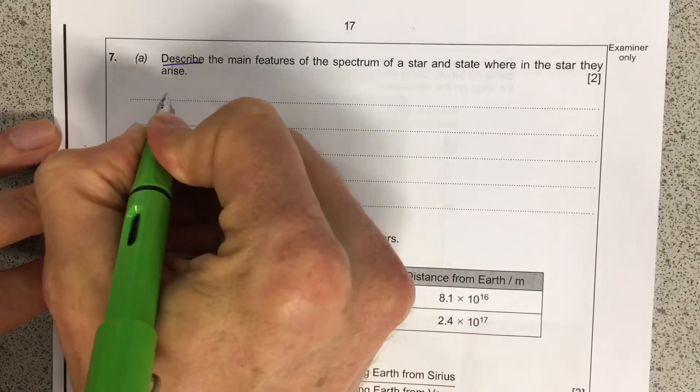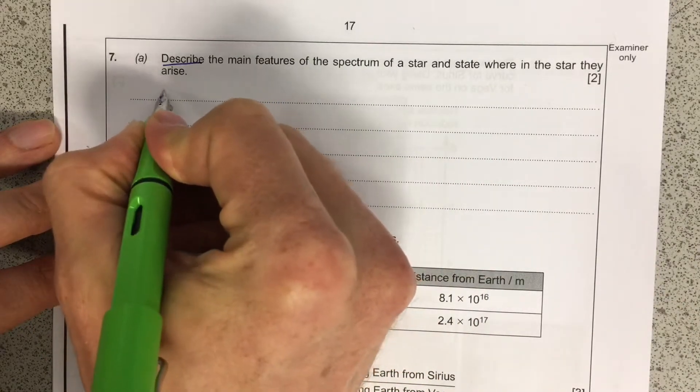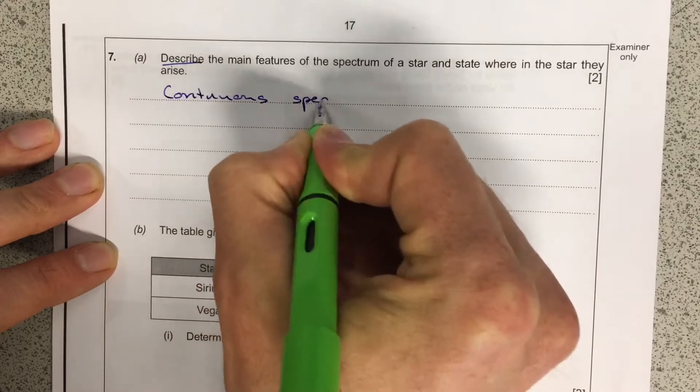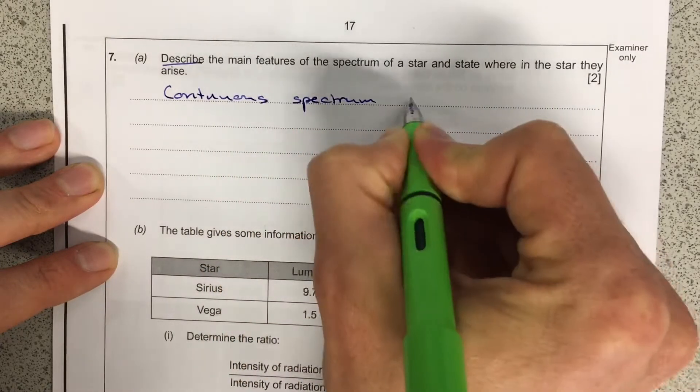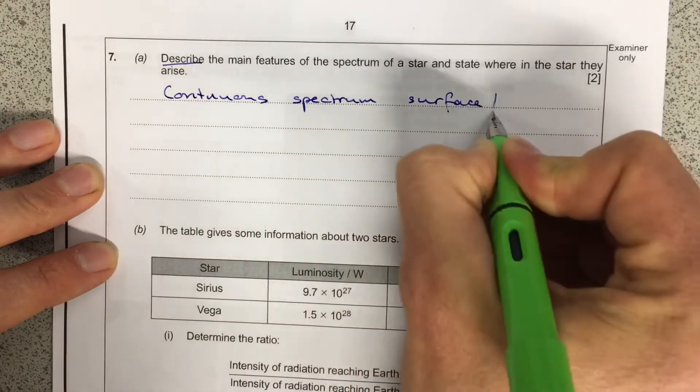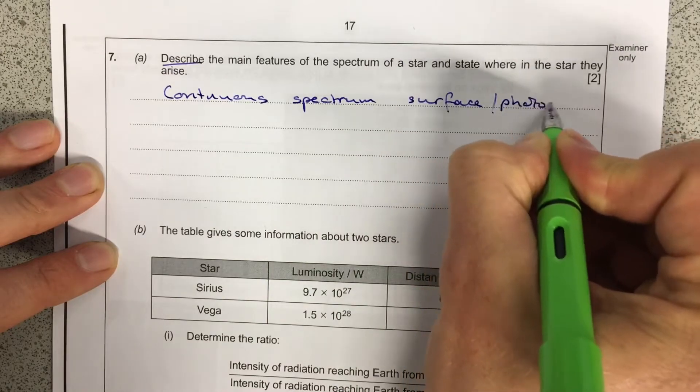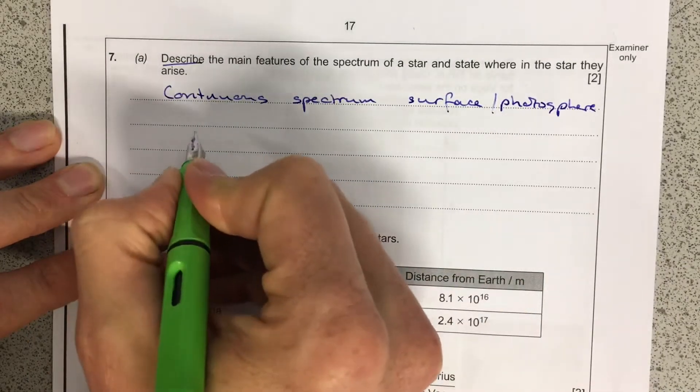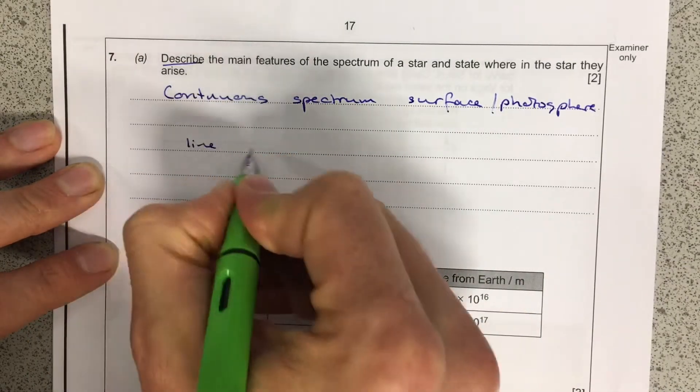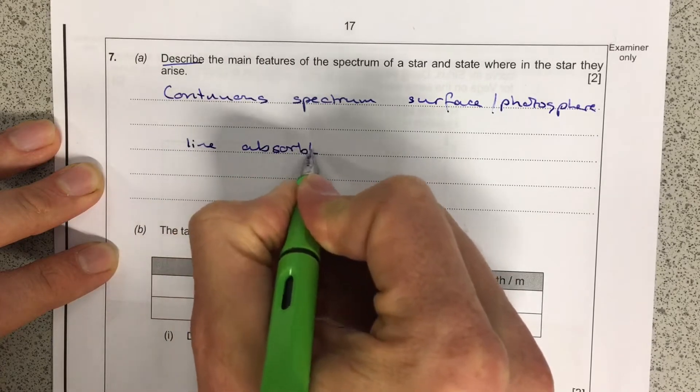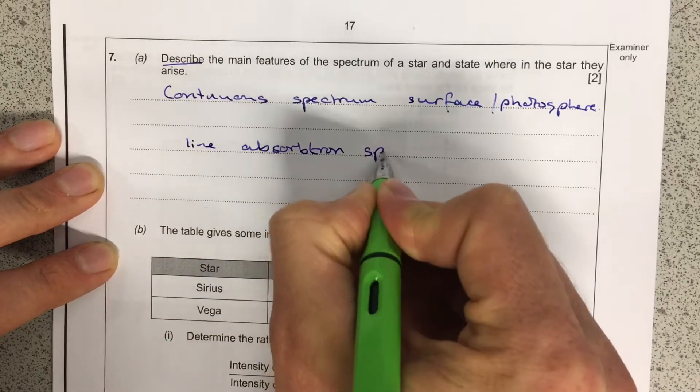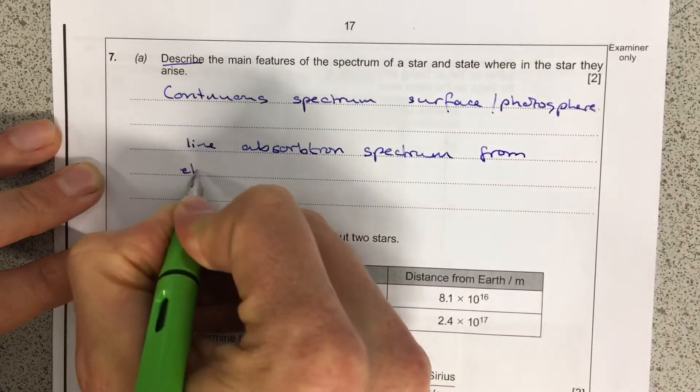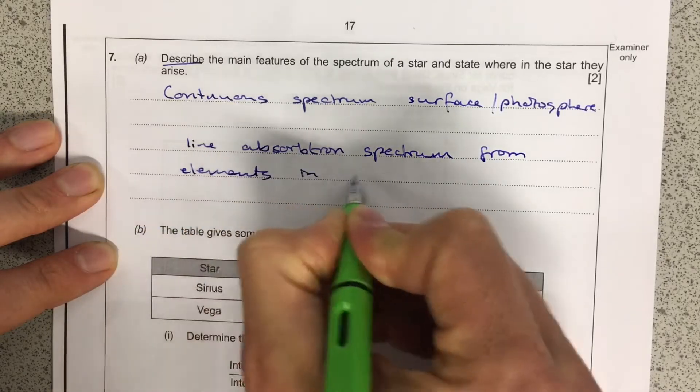So the first thing to remember is that stars are black bodies, so they emit a continuous spectrum. And that comes from the surface or photosphere of the star. And on top of that we have a line absorption spectrum from the elements in the star's atmosphere.